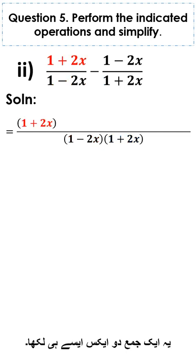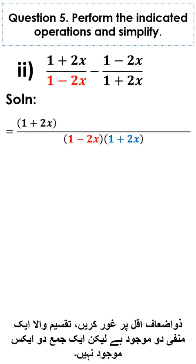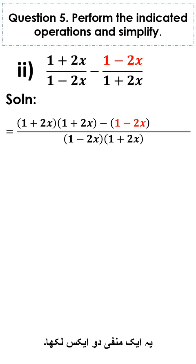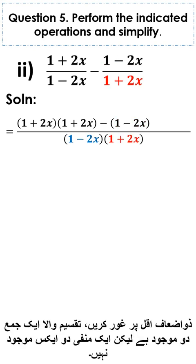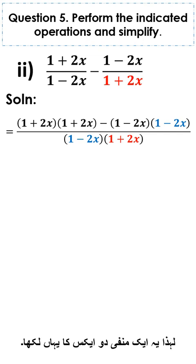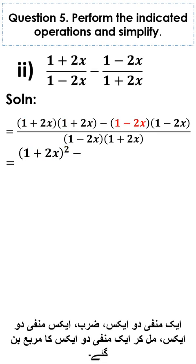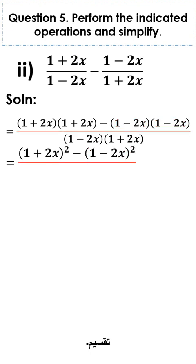1 plus 2x is written as it is. Now look at LCM: 1 minus 2x is present and written as it is. For the second term, 1 plus 2x is present in LCM but 1 minus 2x is not, so 1 minus 2x is written with it. This gives: 1 plus 2x into 1 plus 2x becomes 1 plus 2x whole square, minus 1 minus 2x into 1 minus 2x becomes 1 minus 2x whole square, divided by the LCM.